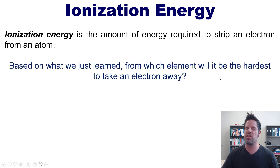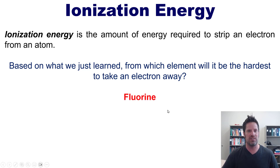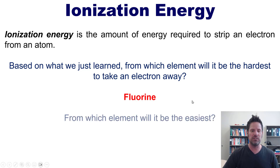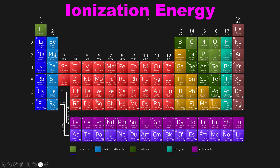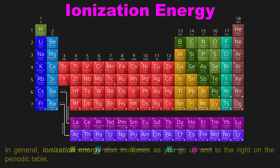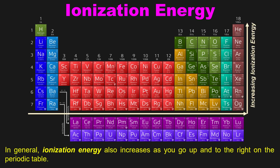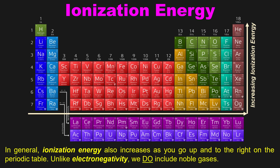Keeping in mind that ionization energy is the amount of energy required to remove an electron — from which element should it be hardest to remove one? You'd think fluorine, the most electronegative and greediest for electrons. And easiest from francium. However, noble gases do count here because you can take electrons away from them — it's just very hard. So ionization energy follows the same general trend as electronegativity, increasing up and to the right, but unlike electronegativity we include noble gases. Thus helium has the highest ionization energy and francium the lowest.